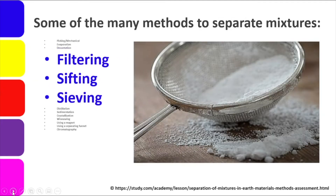Filtering, sifting, and sieving are all methods of straining. They differ in the type of mixture being separated. Filtering involves liquid and solid residue, like in our water faucet filters. Sifting and sieving are similar — both separate solid-to-solid mixtures. Sifting is for fine materials like sand, salt, and sugar, while sieving is for larger solid mixtures like rocks and sand, where you need the finer sand for construction.